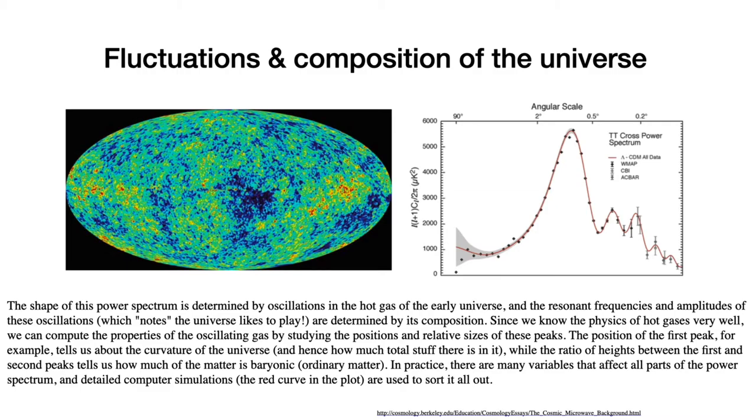Now, here also is a nice blurb from the Berkeley Cosmology Center, which tells us how to interpret these peaks. It says, the shape of this power spectrum is determined by oscillations in the hot gas of the early universe and the resonant frequencies and amplitudes of these oscillations. That is, which notes the universe likes to play are determined by its composition. Since we know the physics of hot gases very well, we can compute the properties of the oscillating gas by studying the positions and the relative sizes of these peaks. The position of the first peak, for example, tells us about the curvature of the universe, and hence how much total stuff there is in it. While the ratio of the heights between the first and second peak tells us how much of the matter is baryonic, ordinary matter, and of course, how much of the matter is dark matter. In practice, there are many variables that affect all parts of the power spectrum and detailed computer simulations. The red curve in the plot are used to sort it all out.